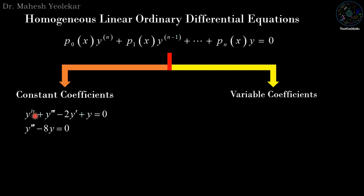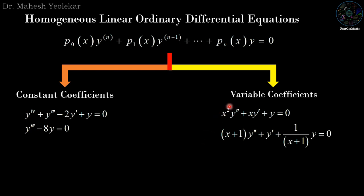Example: y⁽⁴⁾ + y''' - 2y' + y = 0 has coefficients 1, 1, -2, 1, which are constants — so it is a homogeneous linear ODE with constant coefficients. On the other hand, x²y'' + xy' + y = 0 has coefficients x² and x, which are functions of x — so it is a variable coefficient ODE.